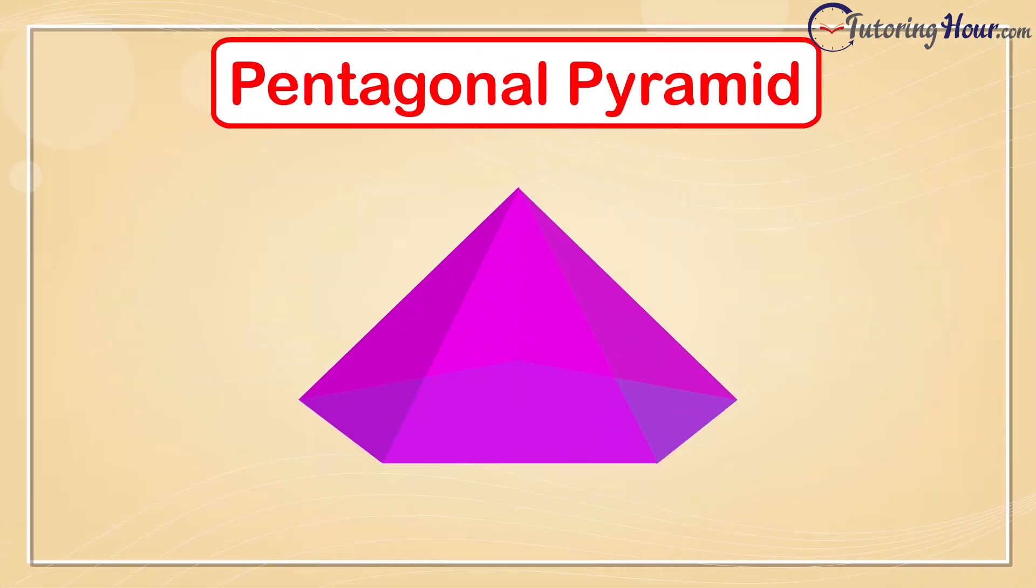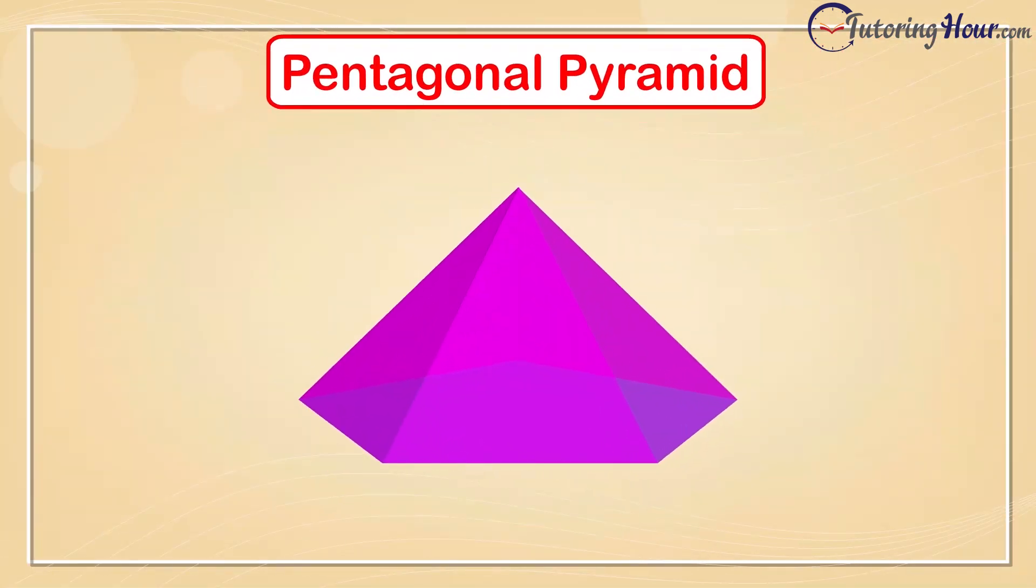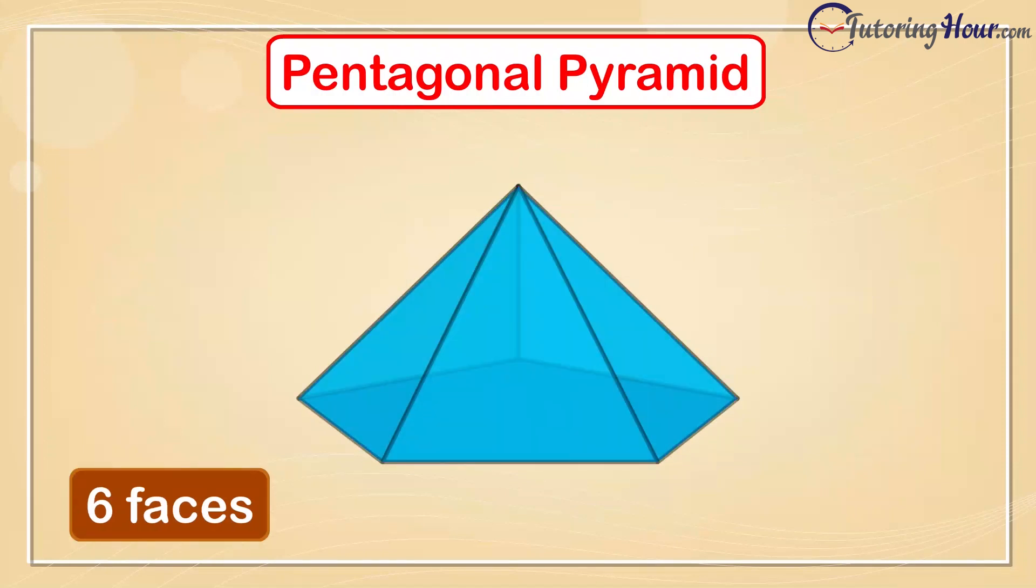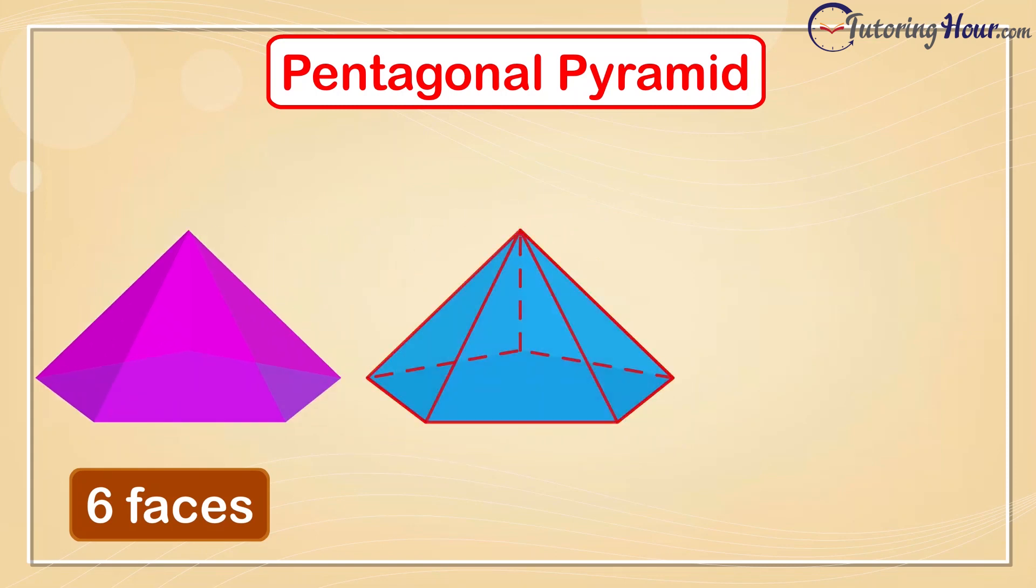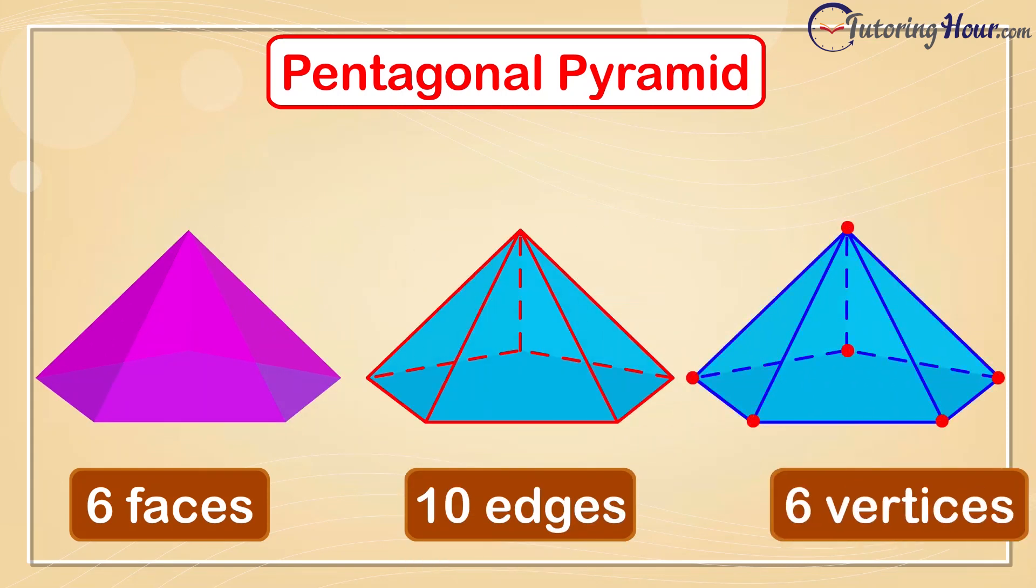Up next is the pentagonal pyramid. A pentagonal pyramid has 6 faces. It has a pentagonal base and 5 triangular side faces. A pentagonal pyramid has 10 edges. It has 6 vertices.